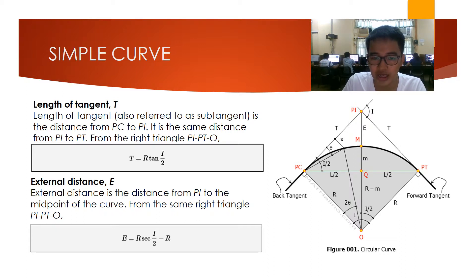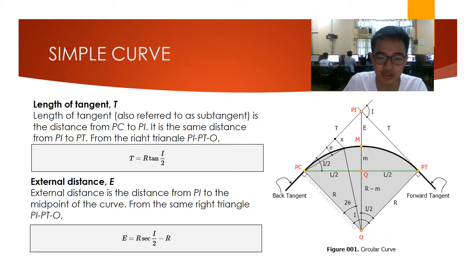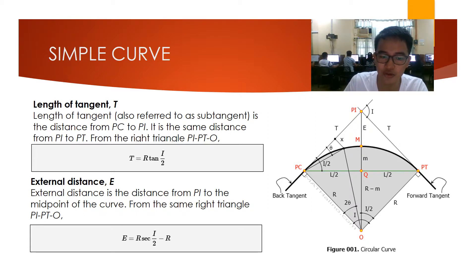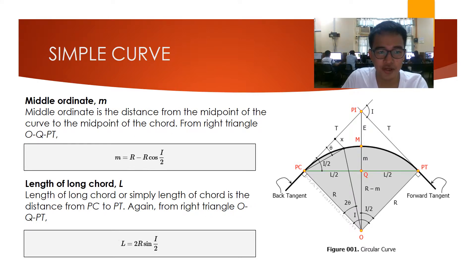From the same right triangle PI-PT-O, we can also derive the external distance formula: E is equal to R secant of I over 2 minus R. We also have the middle ordinate M, which is the distance from the midpoint of the curve to the midpoint of the chord.